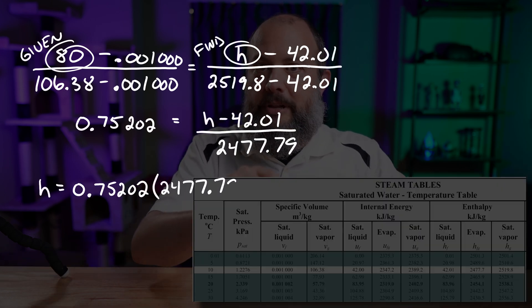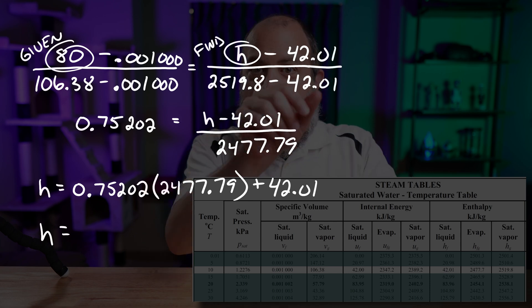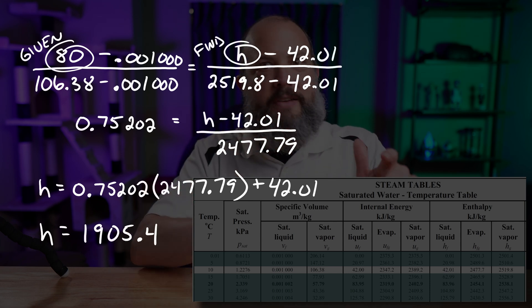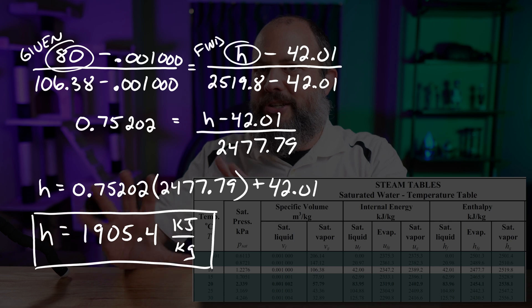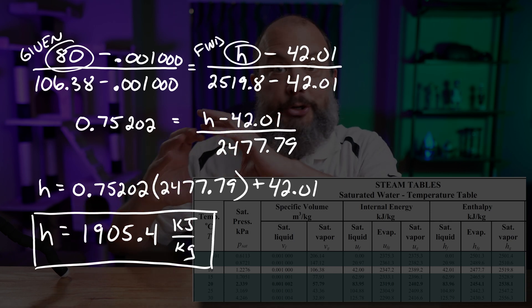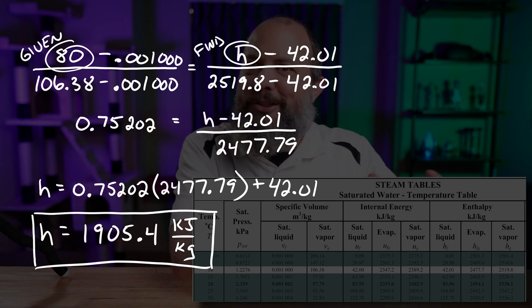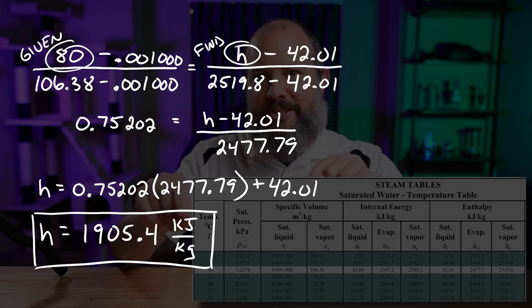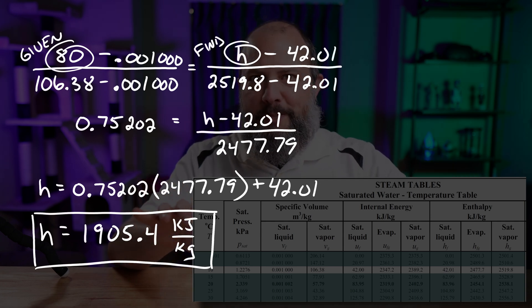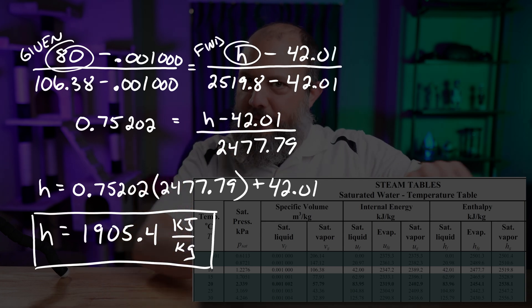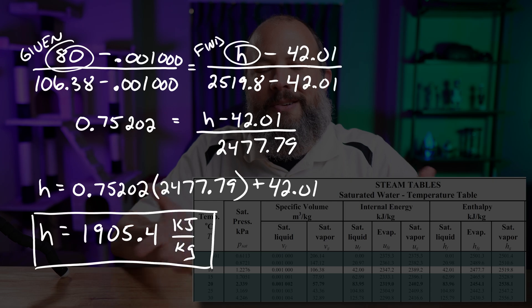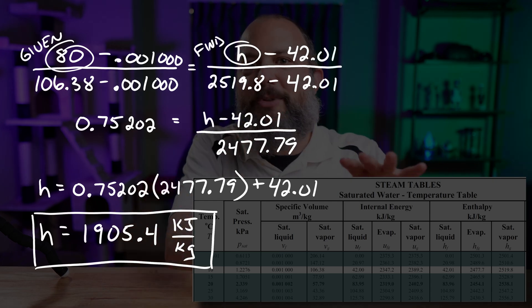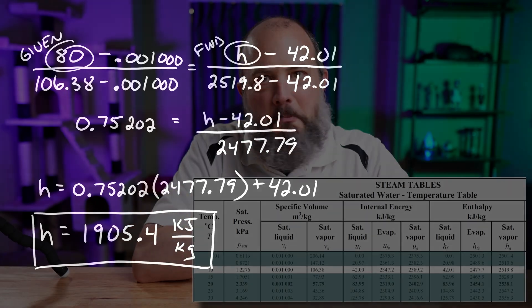And this is every interpolation problem — whether you're interpolating horizontally across a row, vertically between rows, or doing double interpolation. You just set up two fractions: one with the quantity you are given and one with the quantity you're trying to find. Each term should correspond between the two fractions — the lower left term in both fractions should correspond to each other — and you're always solving for the top left value of the second fraction every single time. Indy's back on his treadmill, ready to burn off some popsicle calories.